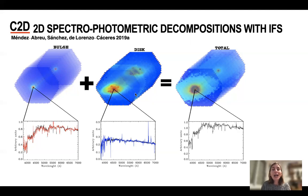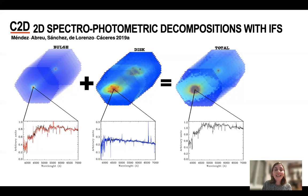So we have not only separated the light from bulge and disk, but also for each spaxel of these data cubes, we have the corresponding spectrum. The black lines show the original spectra we used for modeling the light of bulges or disks.